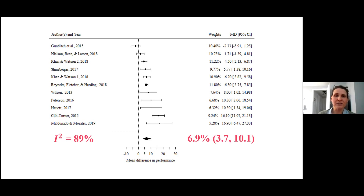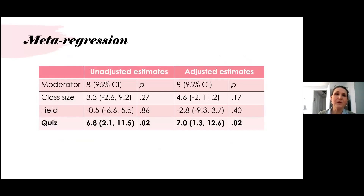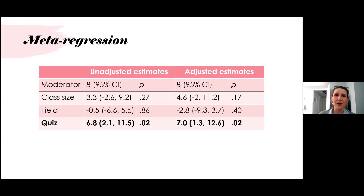We ran a meta-regression to explore sources of these differences in effects across studies. Our three moderators were classroom size of the flipped class, field of study, and weekly quizzes. Class size was split into classes larger than 100 versus smaller than 100, and field of study was split into non-social science majors such as business or engineering versus strictly social science majors such as psychology. Neither class size nor field of study were significant moderators of the overall effect.